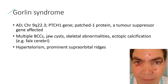Next is Gorlin syndrome. It is an autosomal dominant condition. The clinical features include multiple basal cell carcinomas which can involve the eyelids, odontogenic keratocysts, skeletal abnormalities, and ectopic calcification. Other ocular features include hypertelorism and prominent supraorbital ridges.